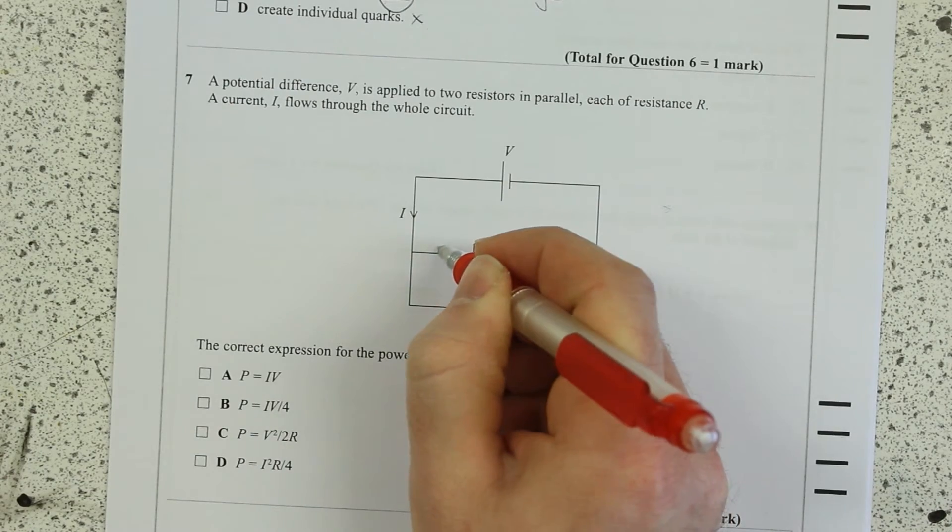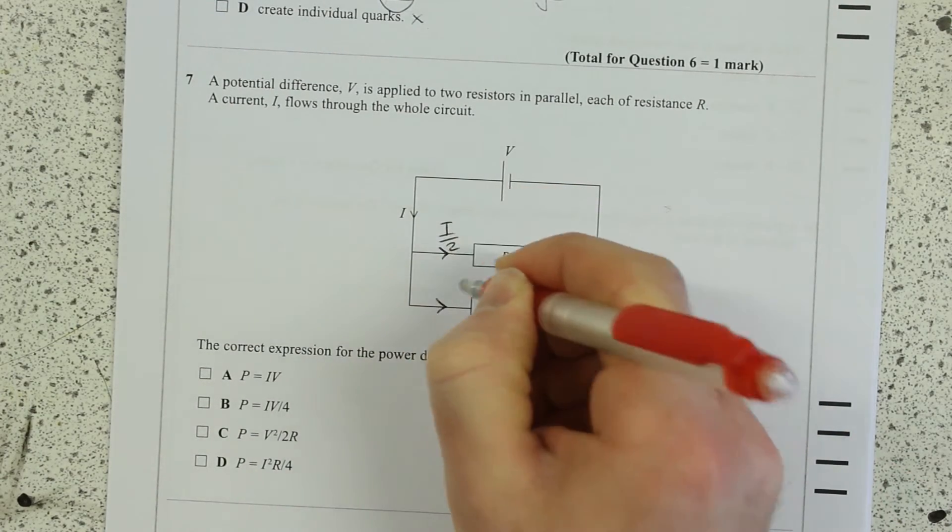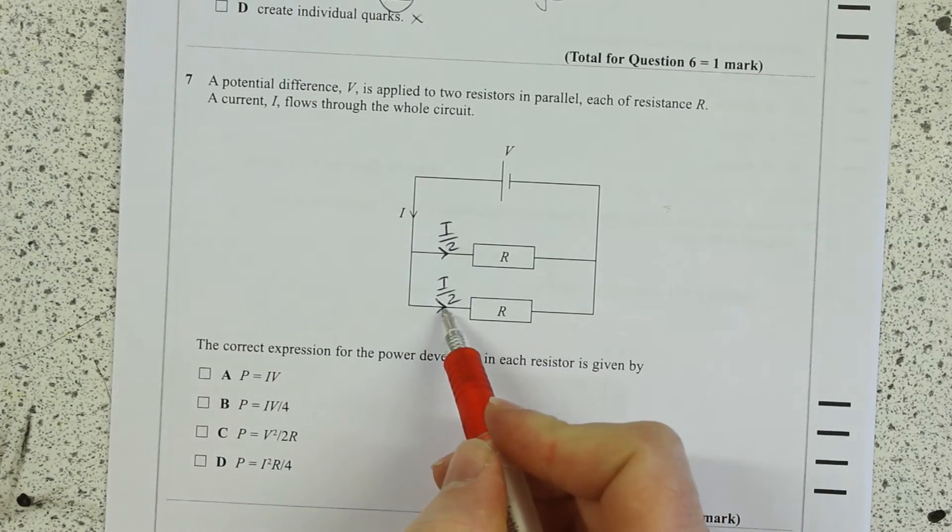If these resistances are equal then we know the current through these two branches is I over 2. Okay and that's where it stems from.